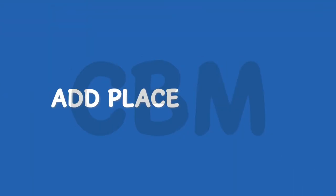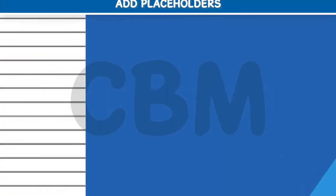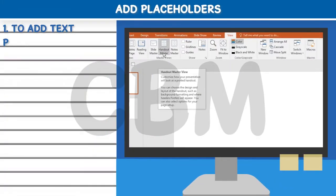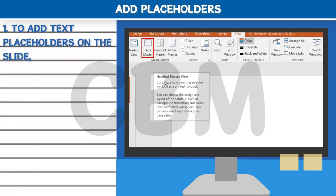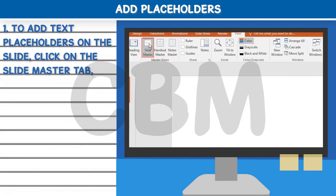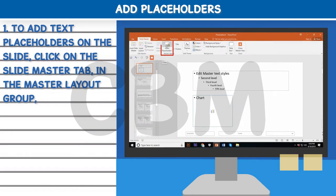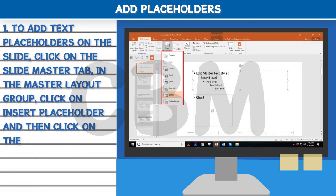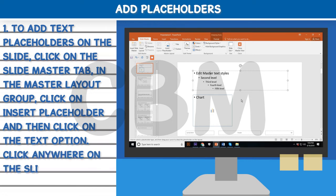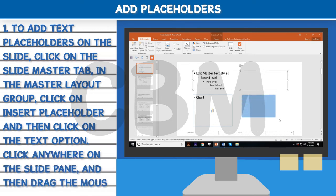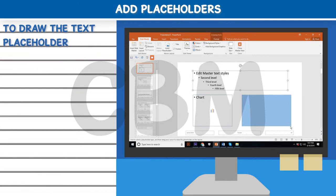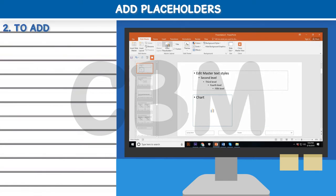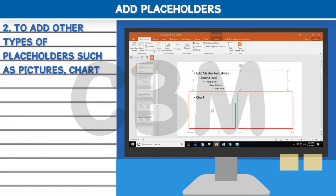Add Placeholders: Step one, to add text placeholders on the slide, click on the Slide Master tab. In the Master Layout group, click on Insert Placeholder and then click on the Text option. Click anywhere in the slide pane and then drag the mouse to draw the text placeholder.